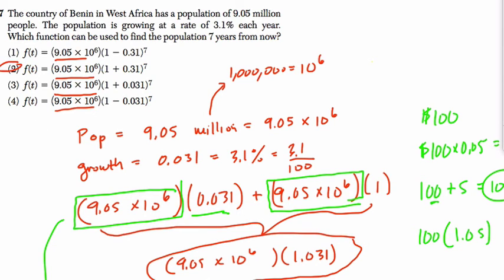Which is actually choice 2, right? Excuse me, choice 3. Notice it's 1 plus 0.031 to the 7th. That way, we have 7 repetitions of increasing by 3.1%. Now, if you don't like that explanation, sorry, let me explain it in a different way.